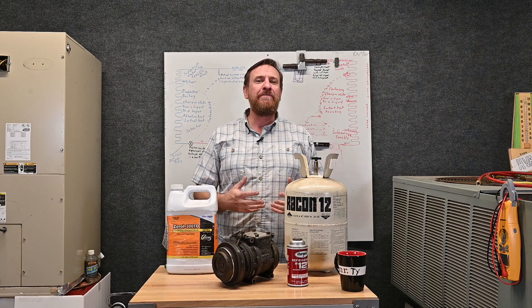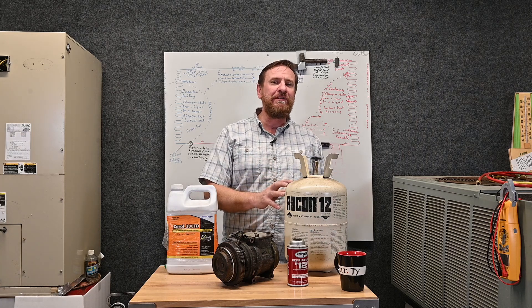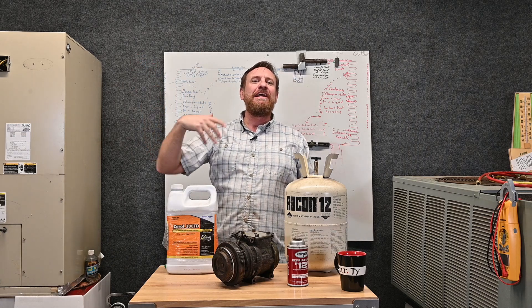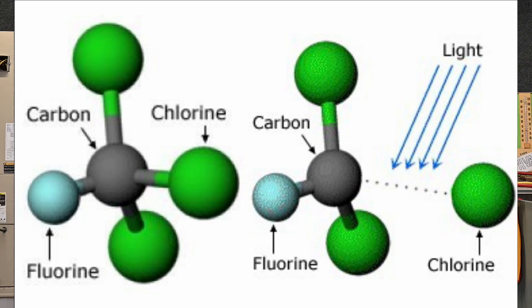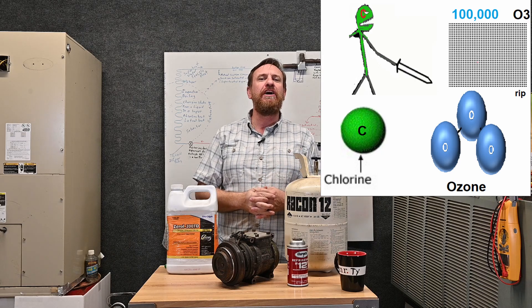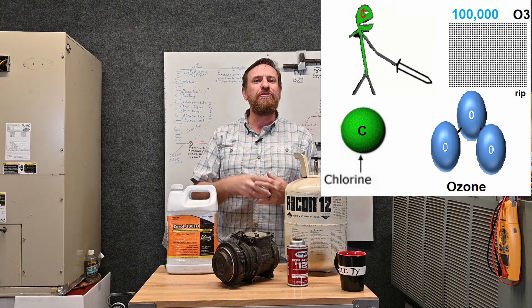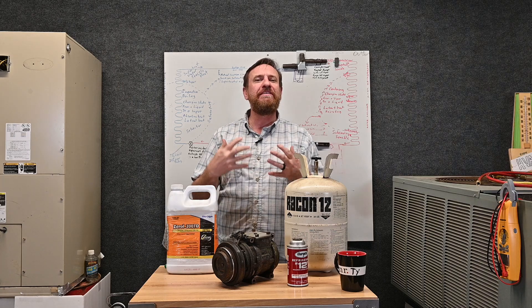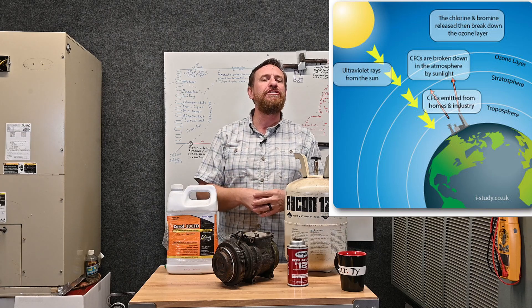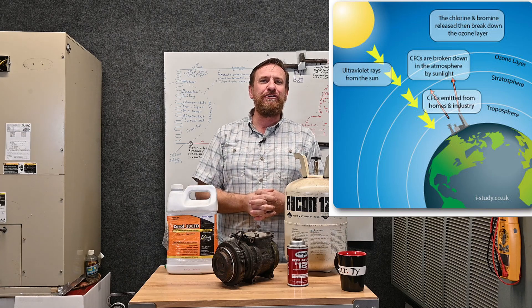R12 was a great refrigerant — it was a single molecule refrigerant. The problem is they found out that this refrigerant would leak out, or people would vent it, and it would end up in the atmosphere. When it ended up in the atmosphere, UV rays from the sun would break the refrigerant down. Because of the CFC, it broke apart very easily, and that chlorine molecule would be free. One molecule of chlorine destroys 100,000 molecules of ozone — and that is an EPA test question. One molecule of chlorine is going to destroy 100,000 molecules of ozone.